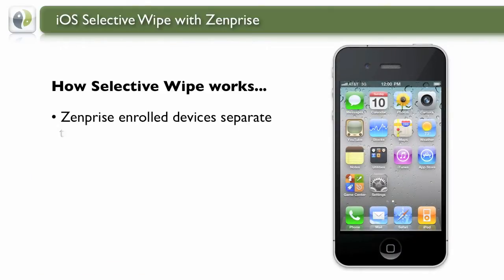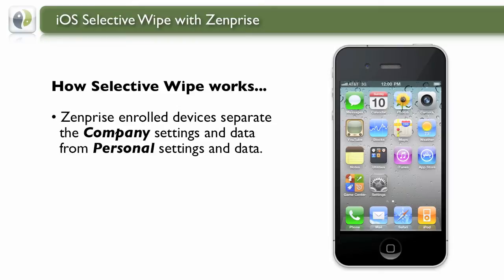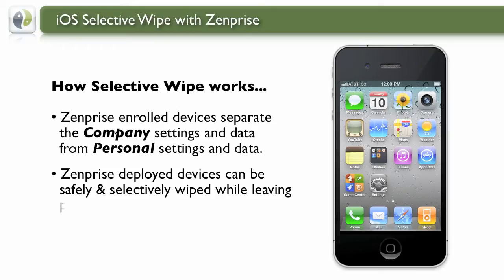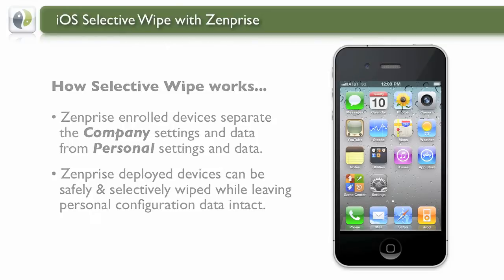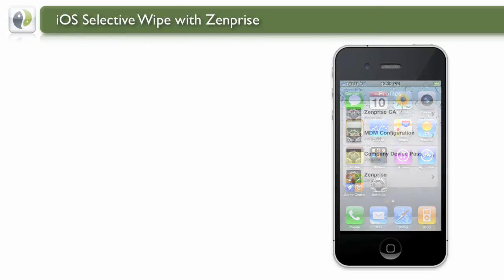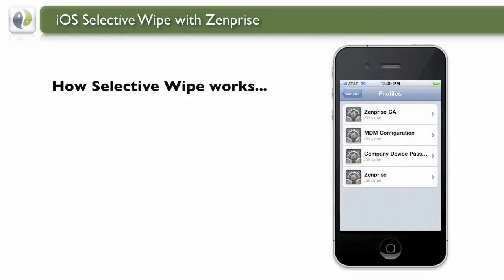How does Selective Wipe work? Simple. A ZenPrize-enrolled device will automatically separate the company's settings and data from your personal settings and data. And when necessary, the deployed device can be safely and selectively wiped, leaving the personal configuration data intact.